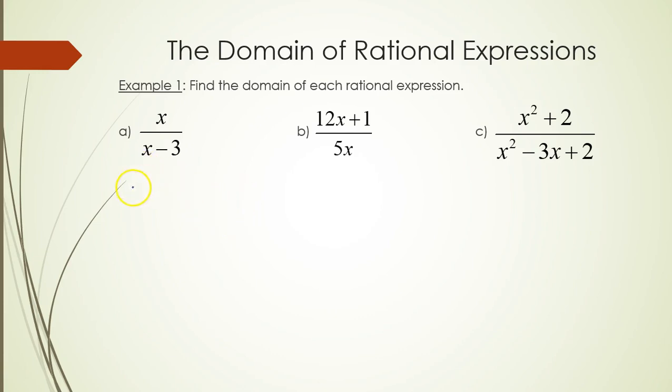So we find the domain of each of the following. For part a, since x minus 3 is what's in the denominator, we have to exclude wherever x minus 3 is equal to zero. So we have to exclude x equals 3.